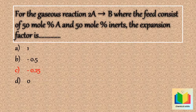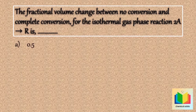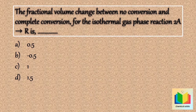Next question: the fractional volume change between no conversion and complete conversion for the isothermal gas phase reaction 2A gives R is — option A: 0.5; option B: −0.5; option C: 1; option D: 1.5.